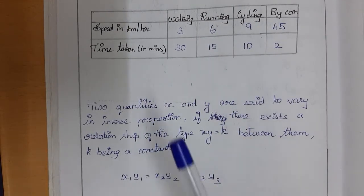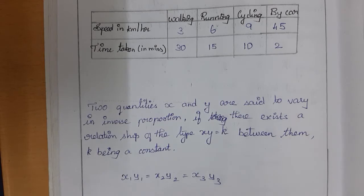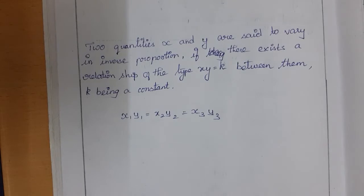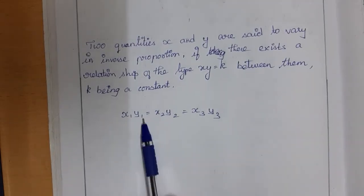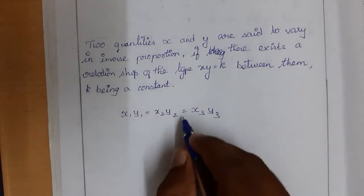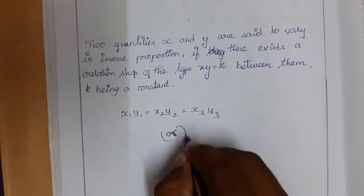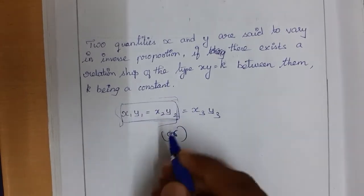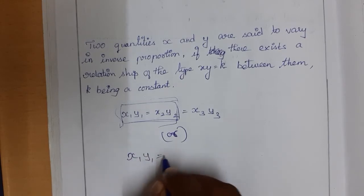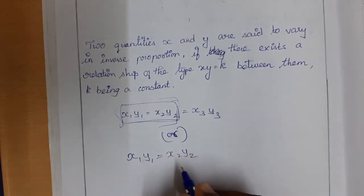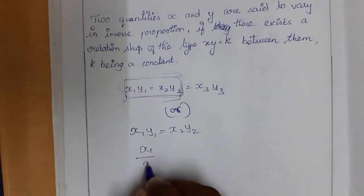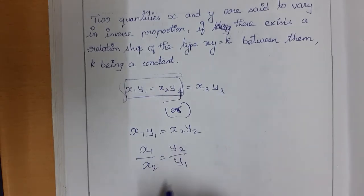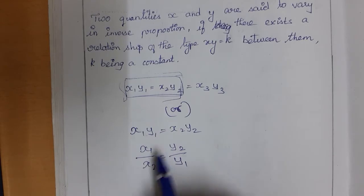Here the products are the same, whereas in direct proportion the ratios are equal. We can also express this as X1 × Y1 = X2 × Y2 = X3 × Y3, or in ratio form: X1/X2 = Y2/Y1. The ratios are equal but in a slightly different arrangement.